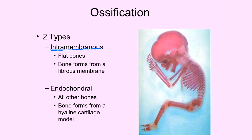That's intramembranous ossification, and you'll have a chance through the activities in this folder to learn about it more. The other type of ossification is endochondral ossification. You can break down the name: 'endo' means within, and 'chondral' refers to cartilage. So endochondral ossification is bone formation happening from a hyaline cartilage model. Looking at the picture of the fetus, we've got a lot of long bones and irregular bones, and these types of bones primarily form through the endochondral ossification mechanism.